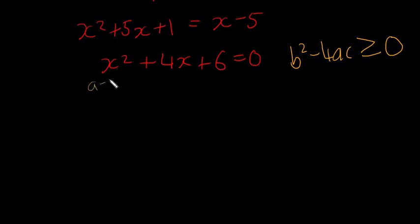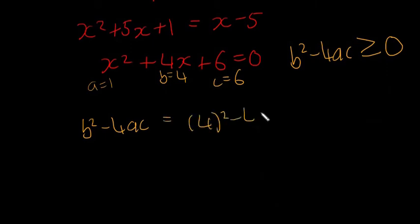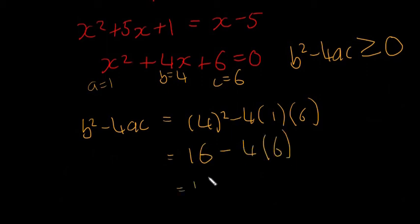So this is a is equal to 1, b is equal to 4, and c is equal to 6. So b squared minus 4ac is equal to 4 squared minus 4 by 1 by 6. This is going to be 16 minus 4 by 6 is going to be 16 minus 24 is going to be minus 8.